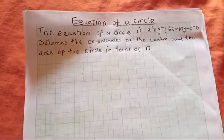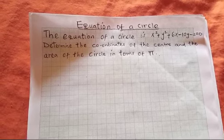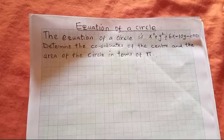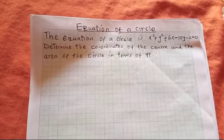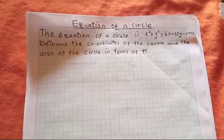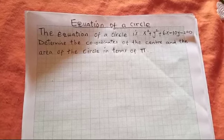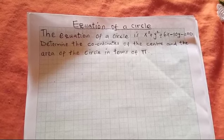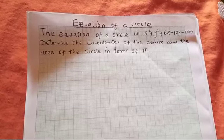Hello guys, welcome one more time to this discussion. We want to look at the equation of a circle. Before us we have a question which reads: the equation of a circle is x squared plus y squared plus 6x minus 10y minus 2 is equals to 0. We are supposed to determine the coordinates of the center and the area of the circle in terms of pi.